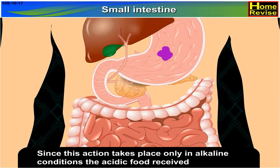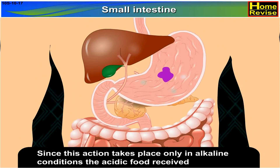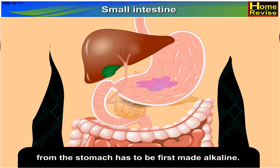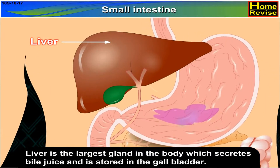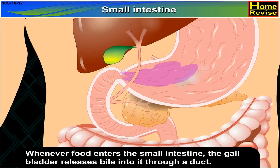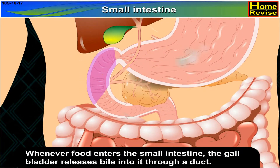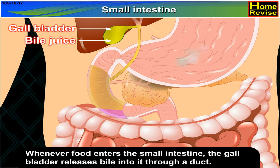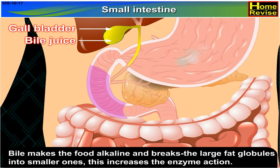Since digestion takes place only in alkaline conditions, the acidic food received from the stomach has to be first made alkaline. The liver is the largest gland in the body, which secretes bile juice that is stored in the gallbladder. Wherever food enters the small intestine, the gallbladder releases bile into it through a duct. Bile makes the food alkaline and breaks large fat globules into smaller ones, which increases enzyme action.